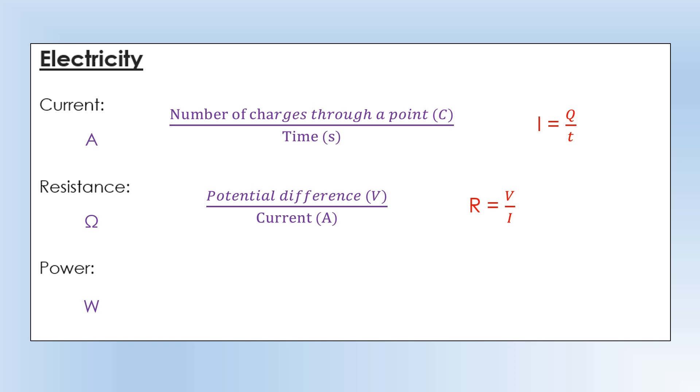We already met power, but we're going to meet it in a different way in terms of electricity. Current is the number of charges per second. Potential difference tells you the energy transferred per charge. So if you multiply them together, you get energy per second or power. P equals IV is the common form you see it in. But you also see it in P equals I squared R, which is helpful for understanding how transformer losses work. And also you see P equals V squared over R as well. But it's still power, so it's still measured in watts.